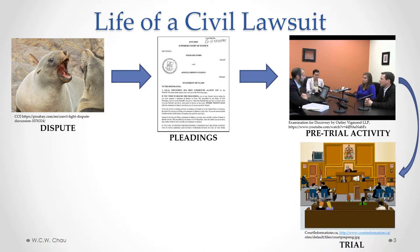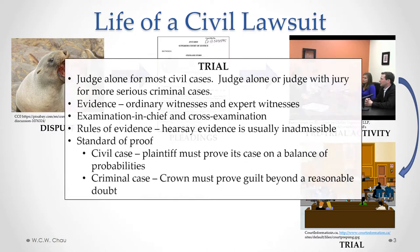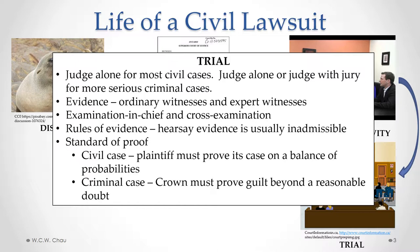If after all that pretrial activity there is still no settlement — and by the way, more than 95% of cases are settled before reaching trial — if we are unable to settle and have to go to trial, in civil cases it's usually a judge alone who hears the case and makes the decision. With more serious criminal cases, there's usually a choice between a judge alone or a judge with a jury, where the matter of guilt or innocence is decided by the jury.